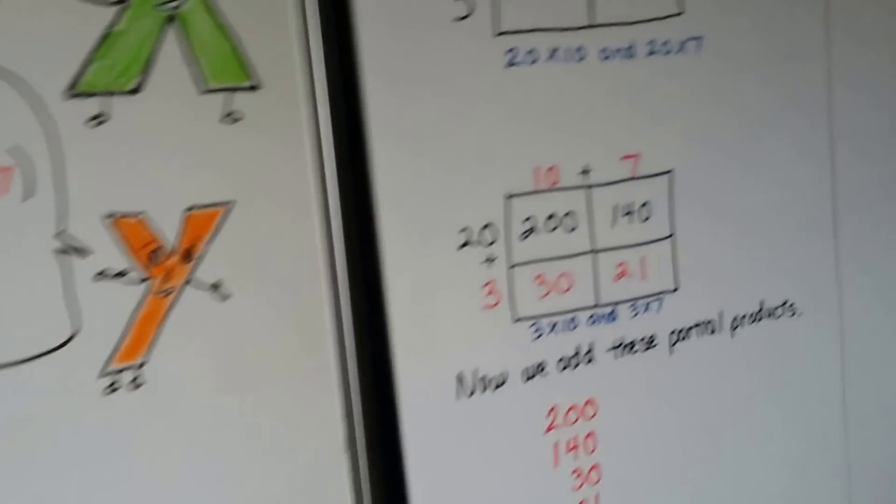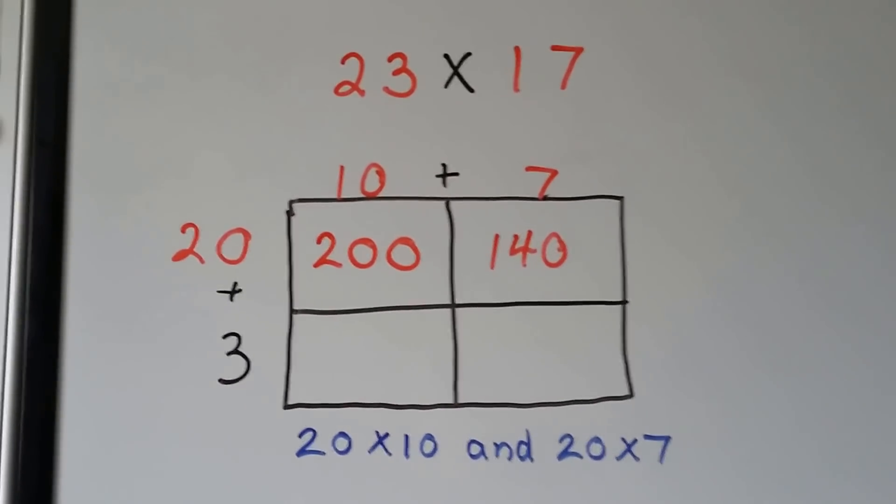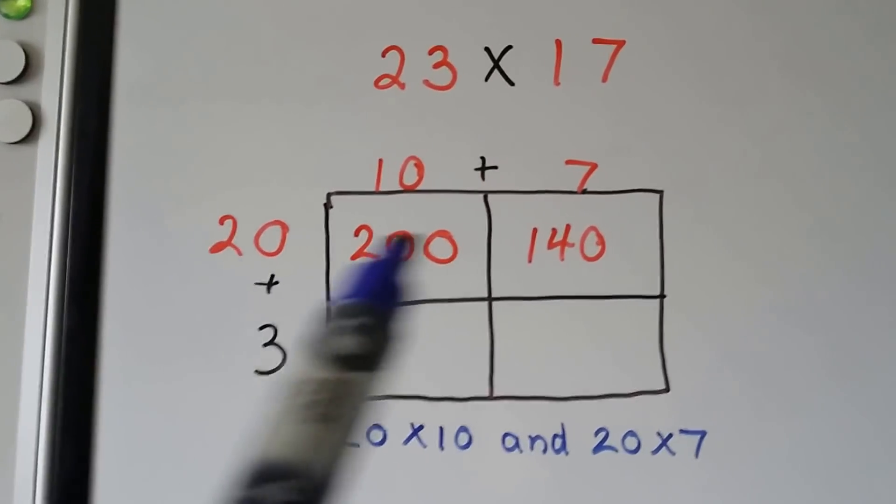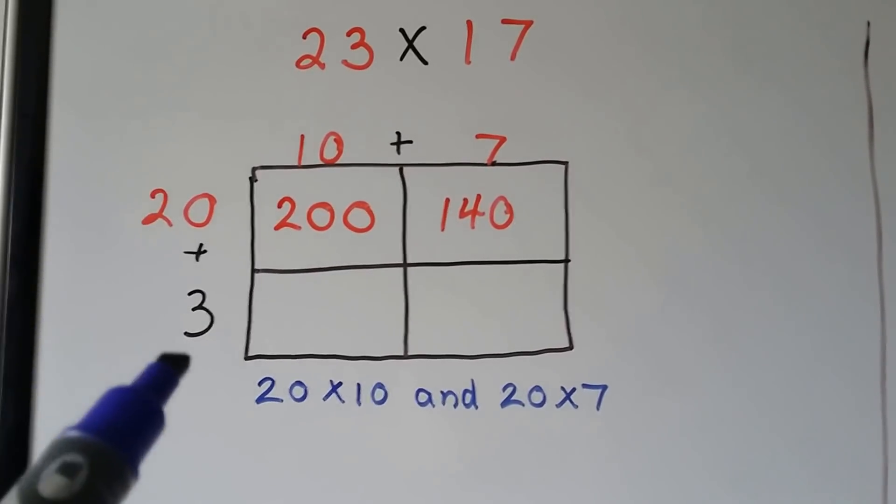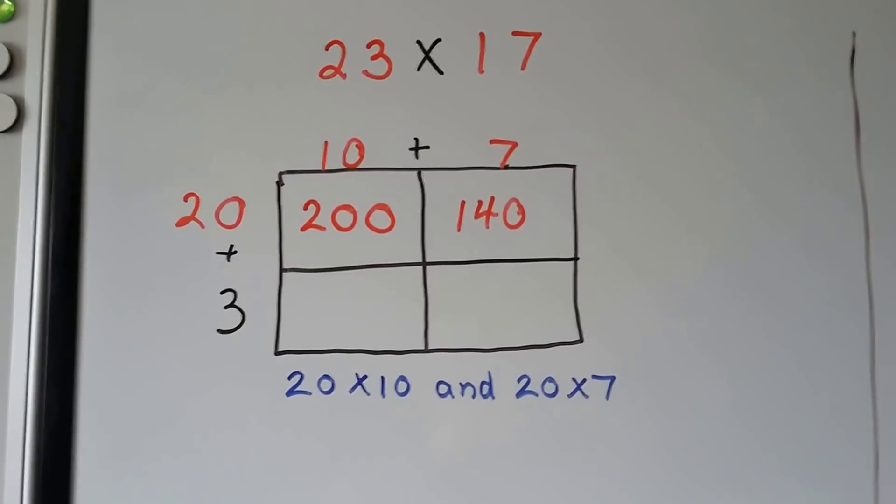To open up your mind. To do 23 times 17, we have two boxes for the 20, and we have two boxes for the 3. We broke the 23 into a 20 and a 3. We broke the 17 into a 10 and a 7.